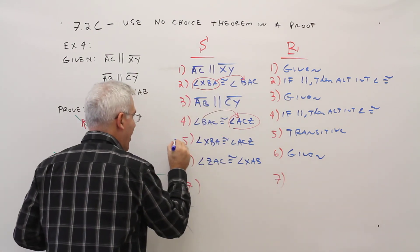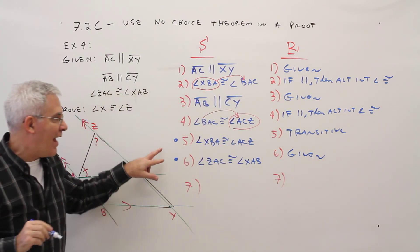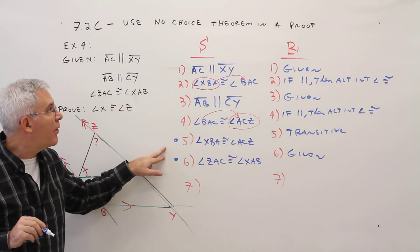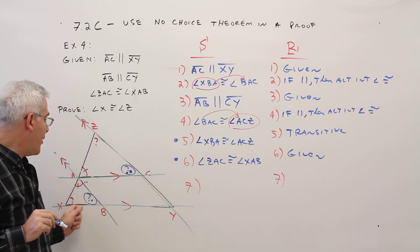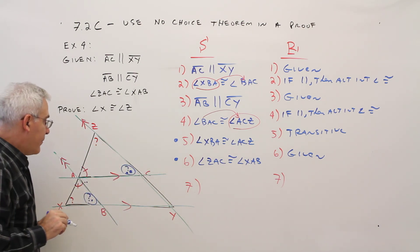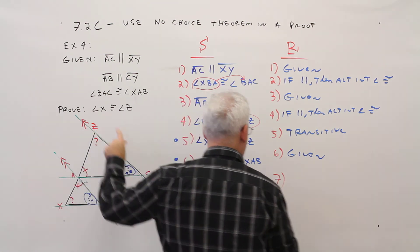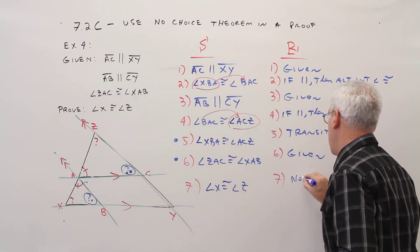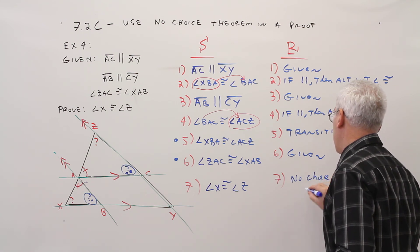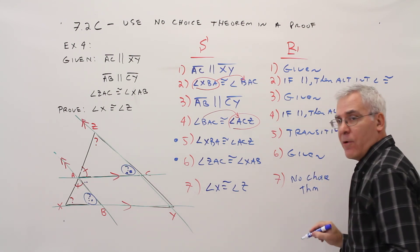So now, based on those two angles being congruent, I can use the no-choice theorem to get the other angles. So angle X is congruent to angle Z. No-choice theorem.